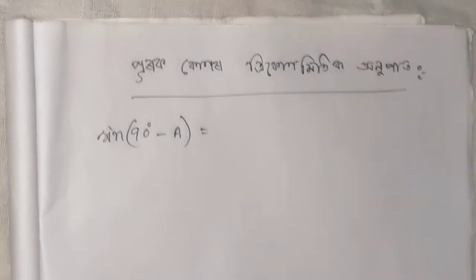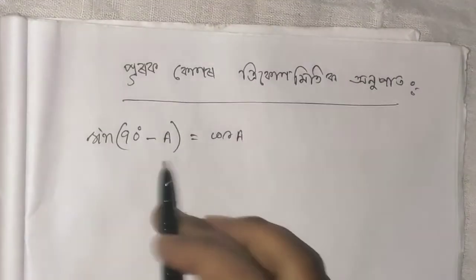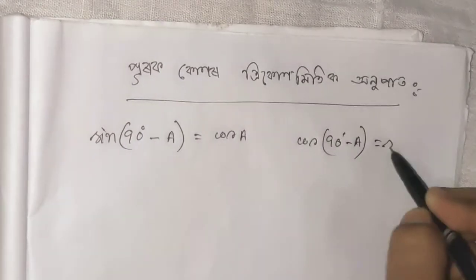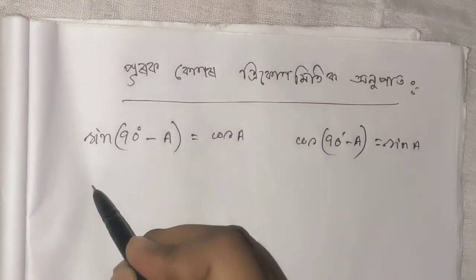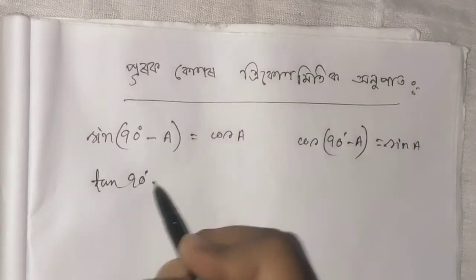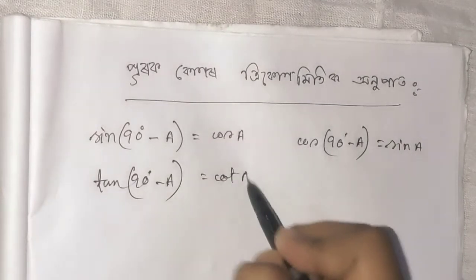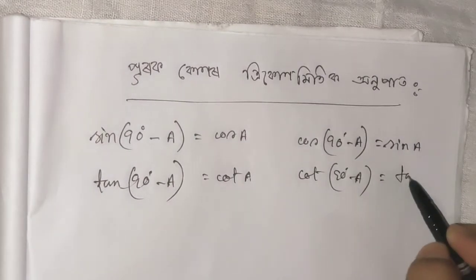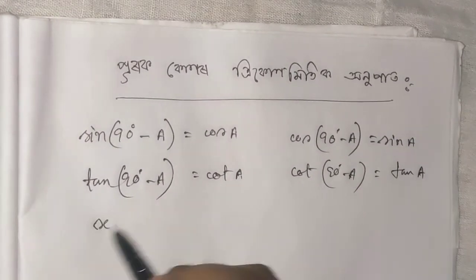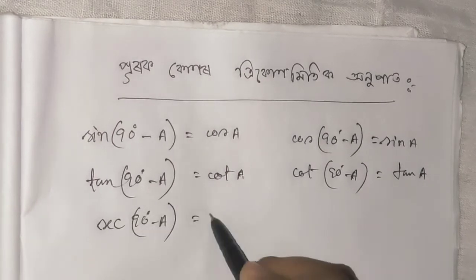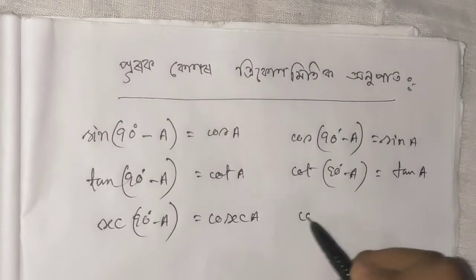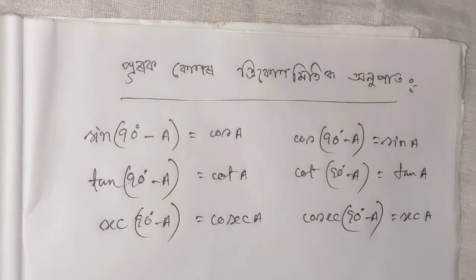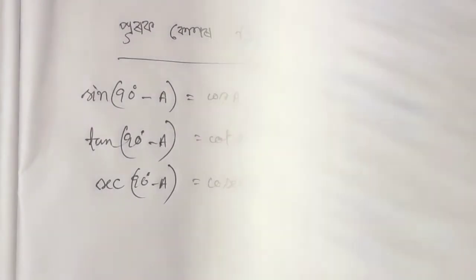cos(90° - A) equals sinA. tan(90° - A) equals cotA. cot(90° - A) equals tanA. sec(90° - A) equals cosecA. cosec(90° - A) equals secA. These are the complementary angle identities.